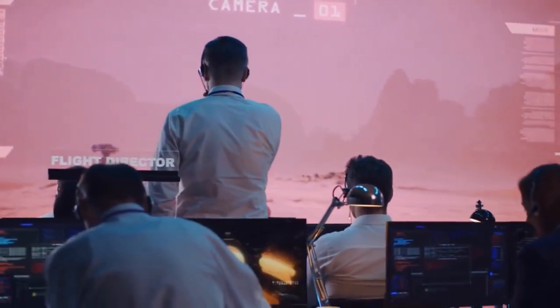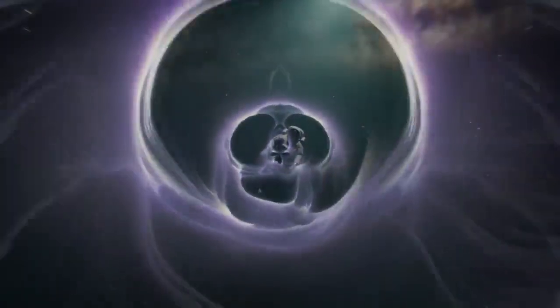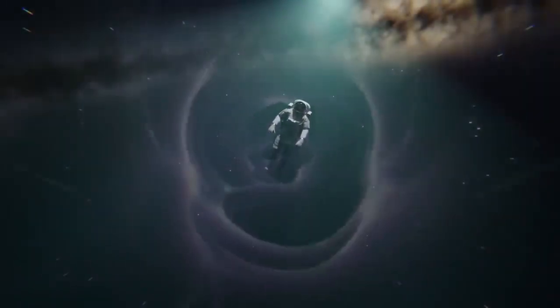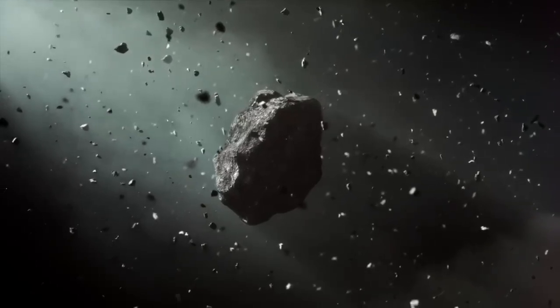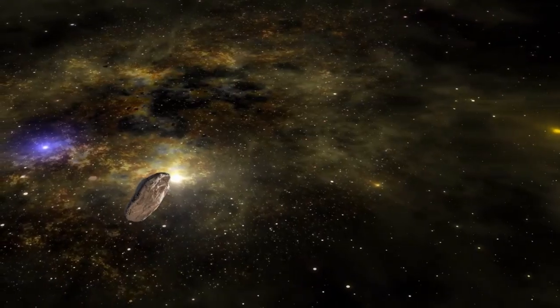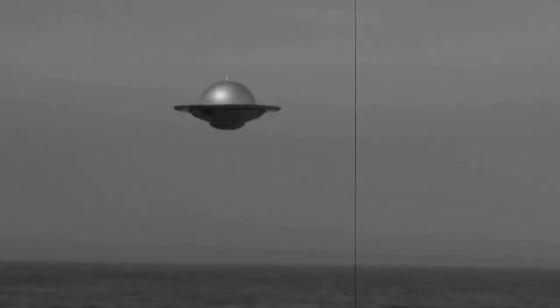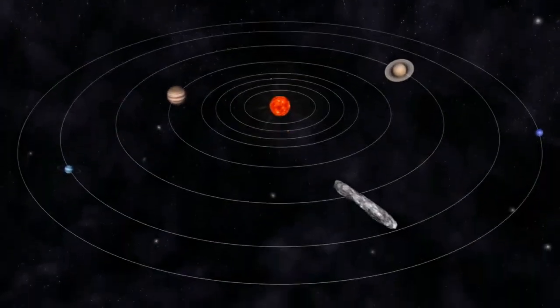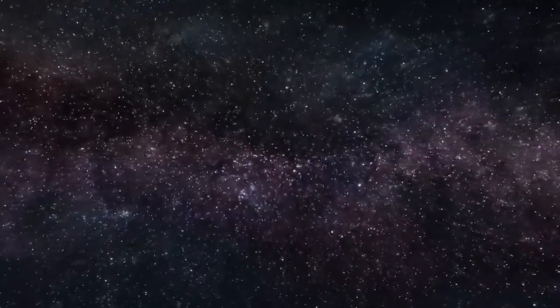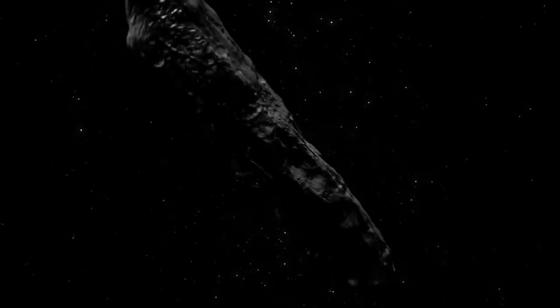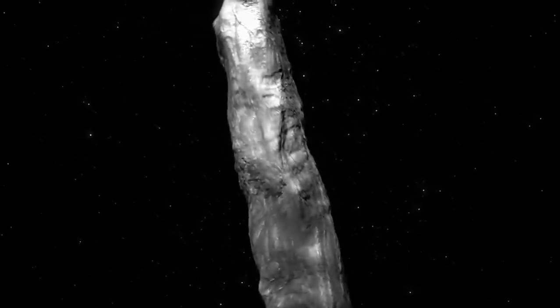But what's even more mind-boggling is that this celestial wanderer had traversed the unfathomable depths of space, defying all odds to make its way into our solar system, hurtling straight towards Earth. 'Oumuamua's unexpected arrival sent shockwaves through the scientific community, forever etching its name in the annals of discovery. The implications were staggering, for this celestial visitor held the potential to unlock the very secrets that shroud our cosmic surroundings. That's why capturing a real image of 'Oumuamua became an obsession, a pivotal milestone in our quest for knowledge.